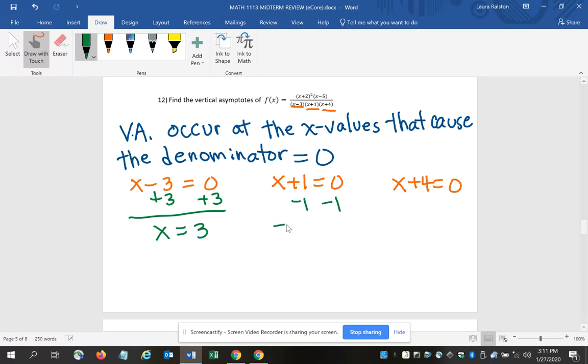Then I subtract 1 for x plus 1 to isolate the x, so I get x is negative 1. On the last one, we subtract 4 and we get x is negative 4.